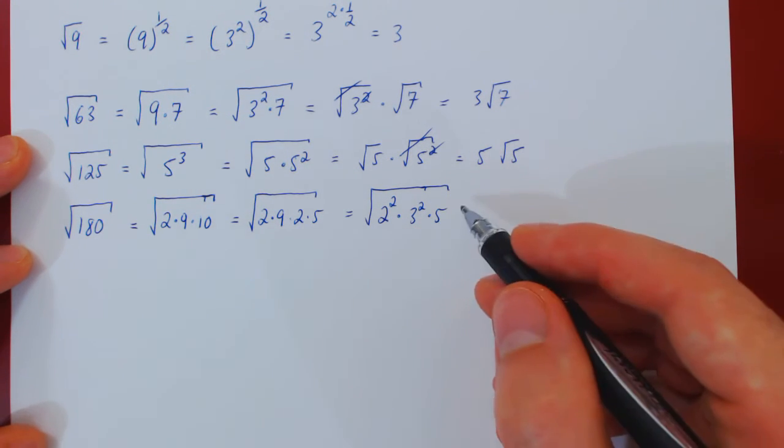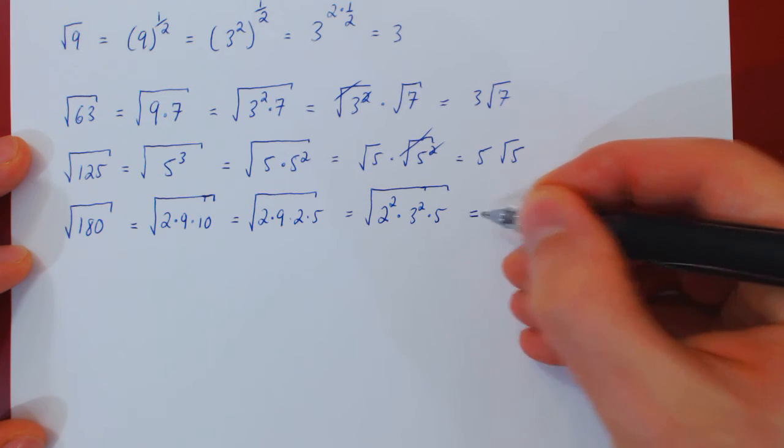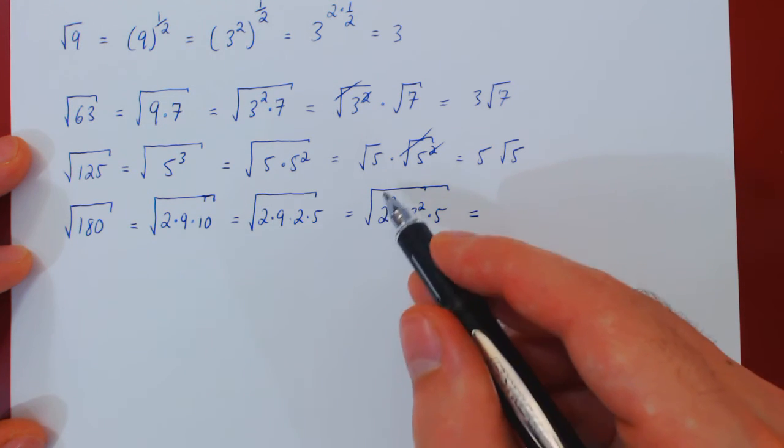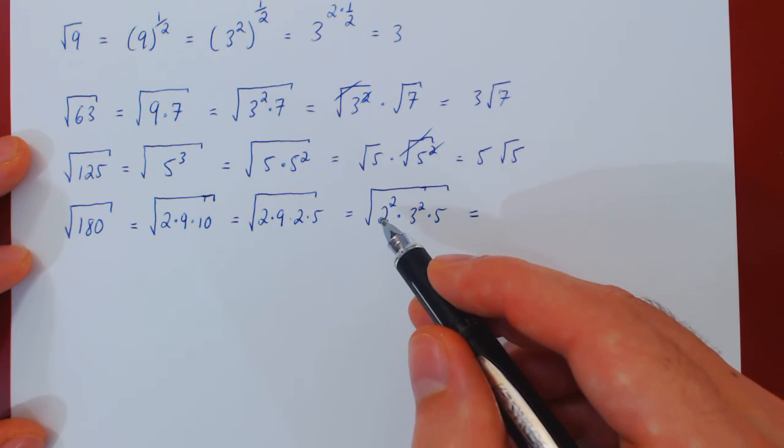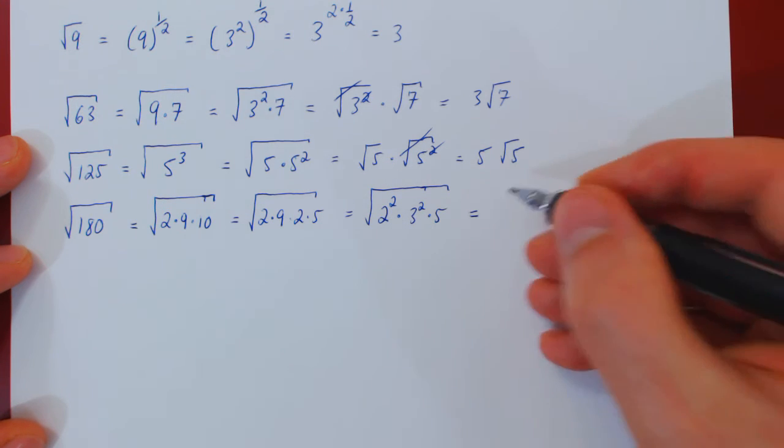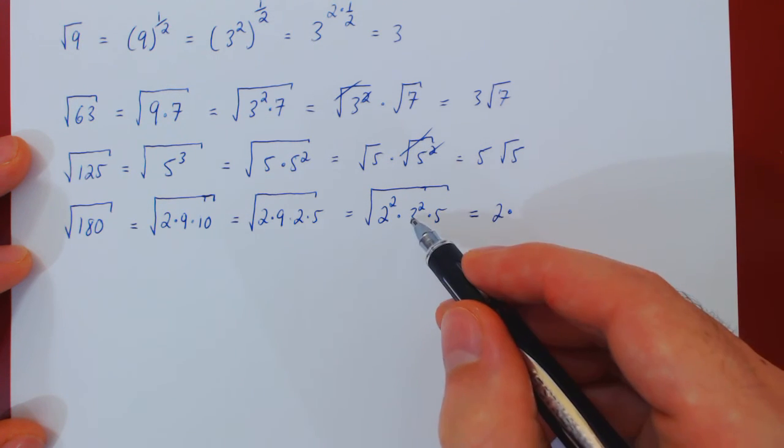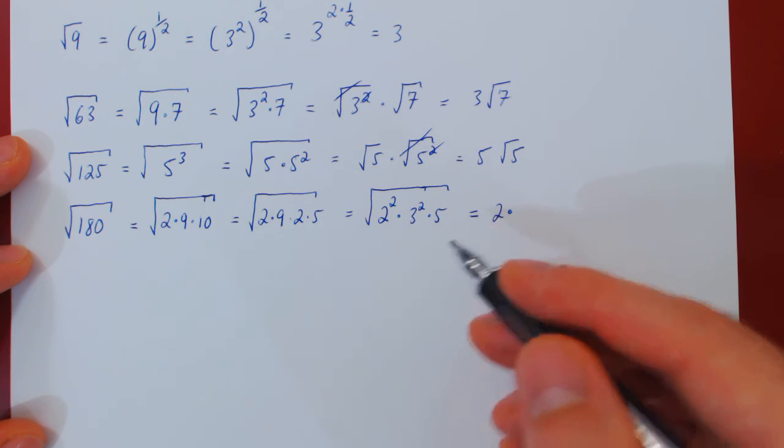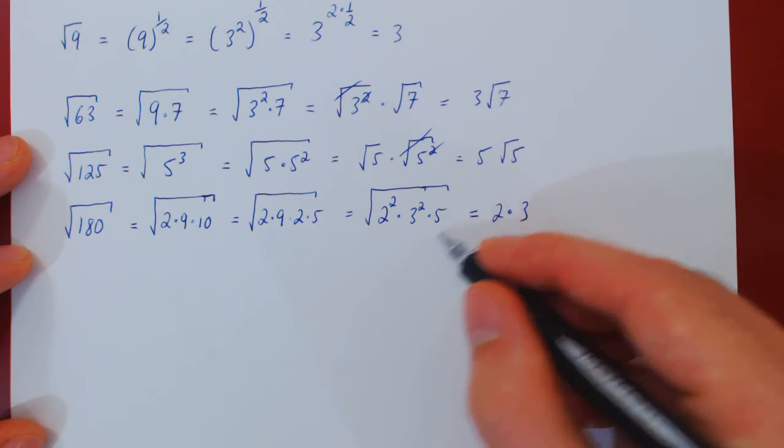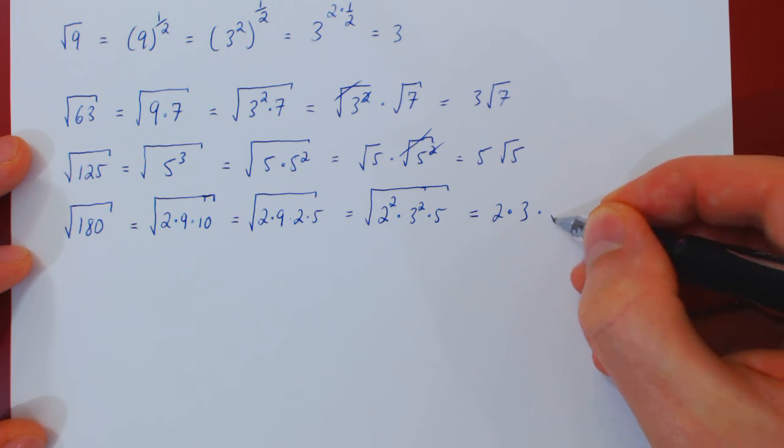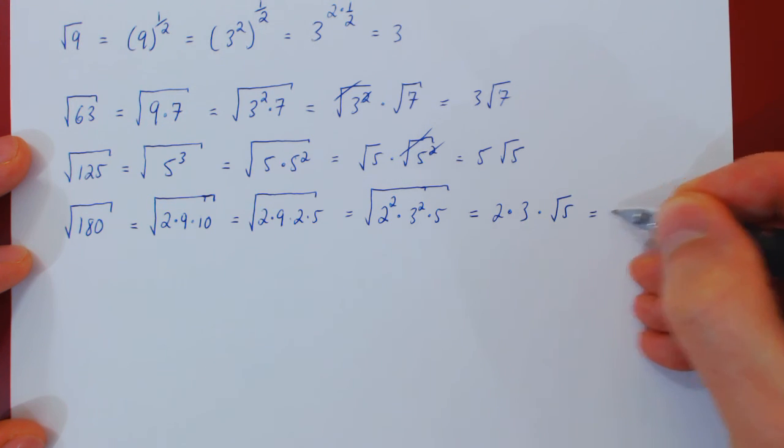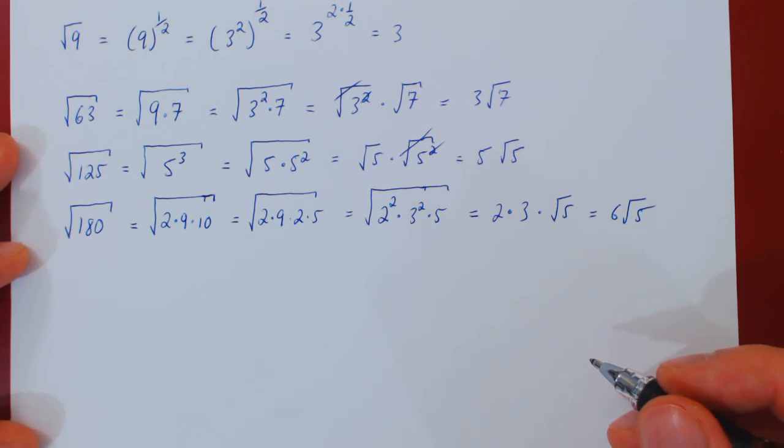So if we distribute, we'll have the root of this times the root of this times the root of this. The root of 2 squared is 2, the root of 3 squared is 3, and the root of 5 stays root of 5. And 2 times 3 is 6, so we're left with 6 times root of 5.